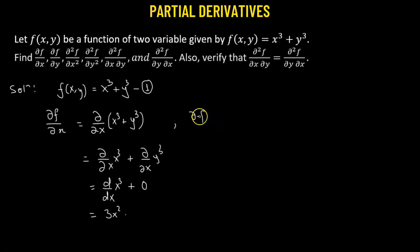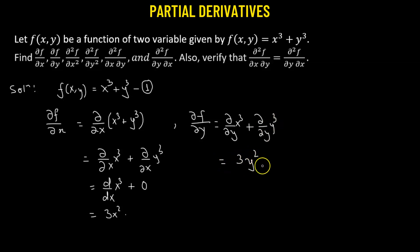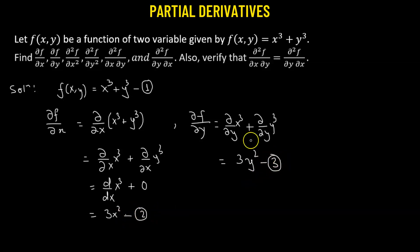Now we find the partial of f with respect to y. That will be the partial with respect to y of x³, which becomes zero, plus the partial with respect to y of y³, which gives us 3y². We label partial of f with respect to x as number 2, and partial of f with respect to y as number 3.